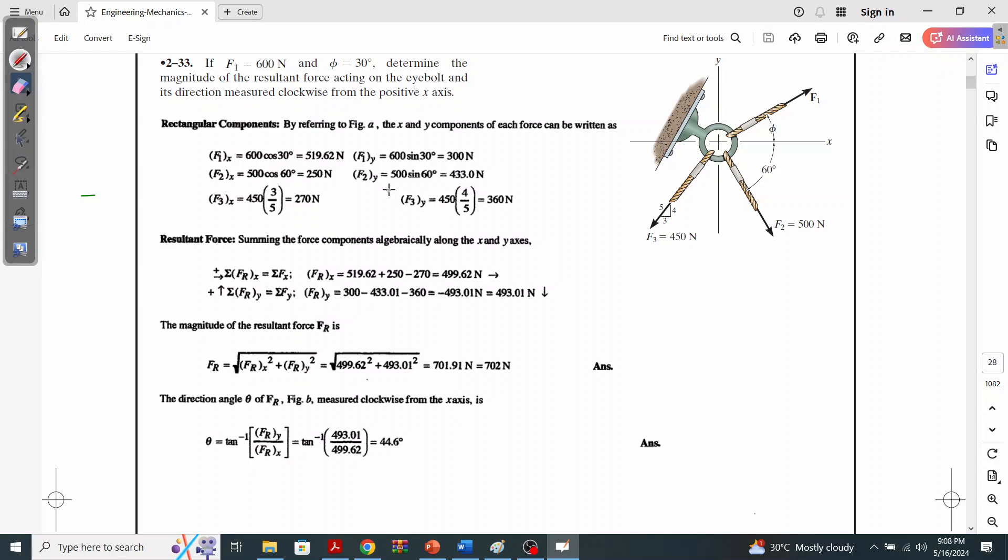What about F3x, which is this force? Both of its components will be negative because this component will be negative along the x-axis, and this component which is acting along the y-axis will also be negative. So it will be 450 times 3 upon 5 (the ratio for the x-axis), which is 270 Newtons.